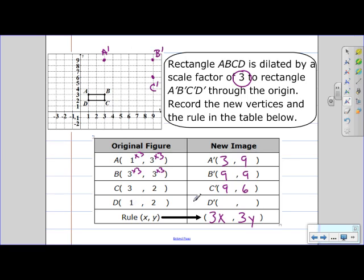Multiply by 3, we get 3. Multiply by 3, and we get 6. So D prime is at 3, 6.